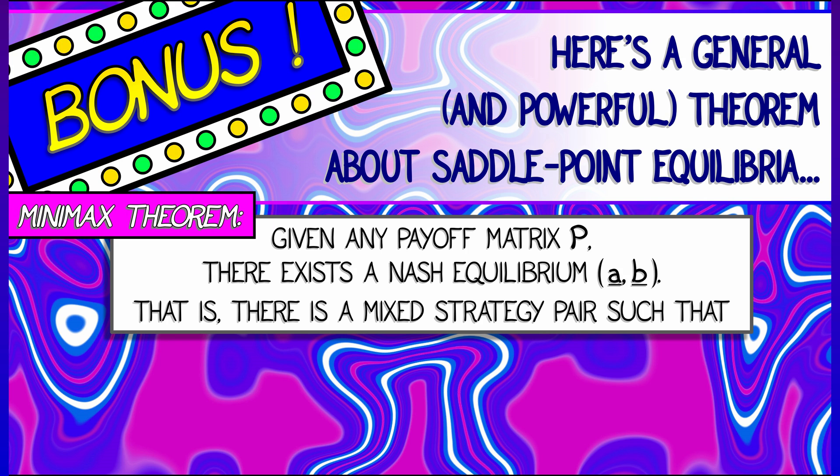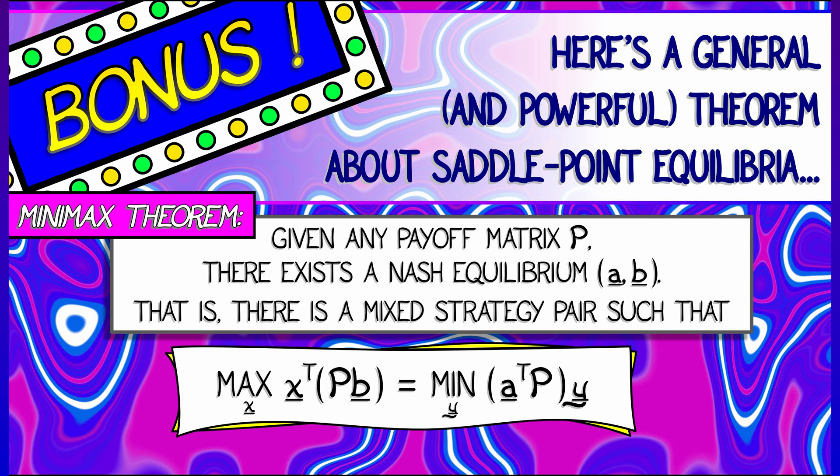Given any payoff matrix P, there exists a Nash equilibrium, that is probability vectors A and B, so that if you look at the expected payout A transpose P B, it's optimal. It's a maximum for one player and a minimum for the other. That is, the maximum over all vectors X of X transpose P times B is equal to the minimum over all vectors Y of A transpose P Y.